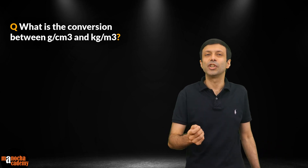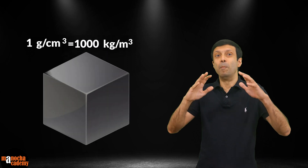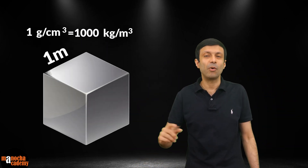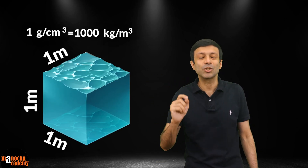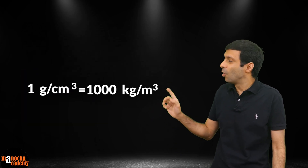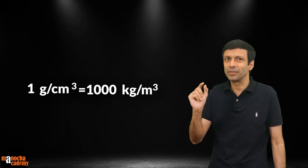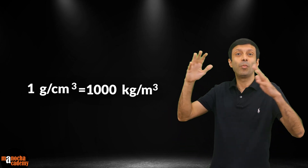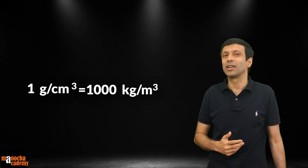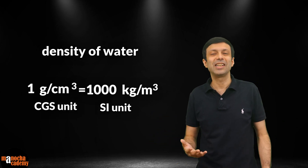Now do you know what is the conversion between the CGS and the SI unit of density? That is the conversion between gram per centimeter cube and kg per meter cube. The conversion is 1 gram per centimeter cube equals 1000 kg per meter cube. So if you take a big cube of water of size 1 m × 1 m × 1 m and fill it with water, the mass of that water is going to be 1,000 kg. So the density of water is 1 gram per centimeter cube in CGS units and 1000 kg per meter cube in SI units.